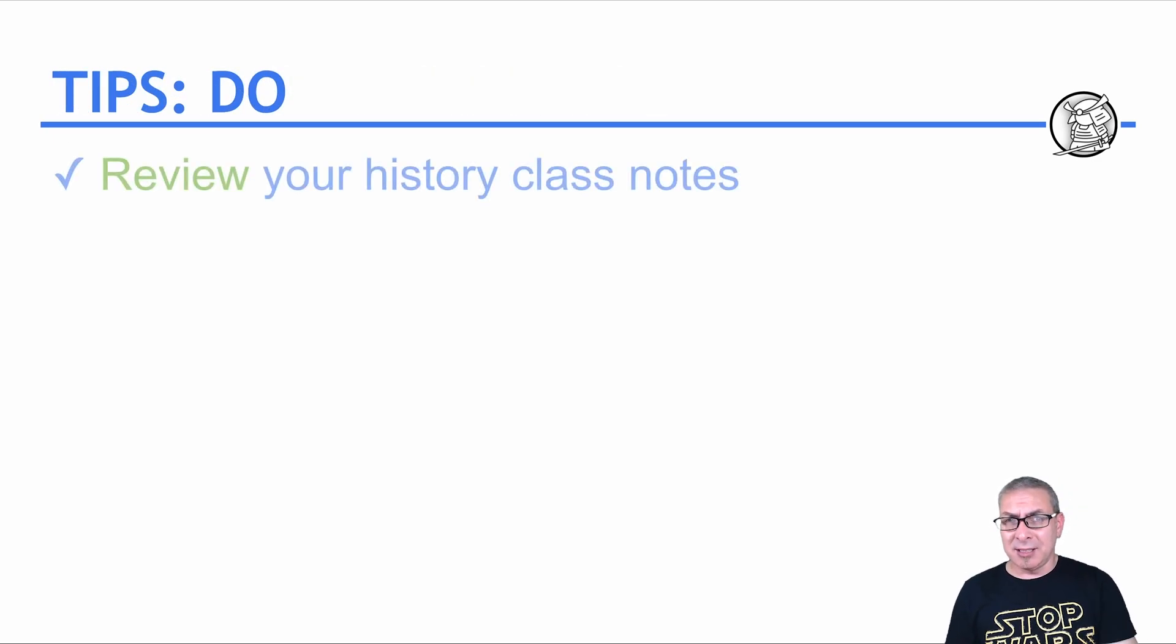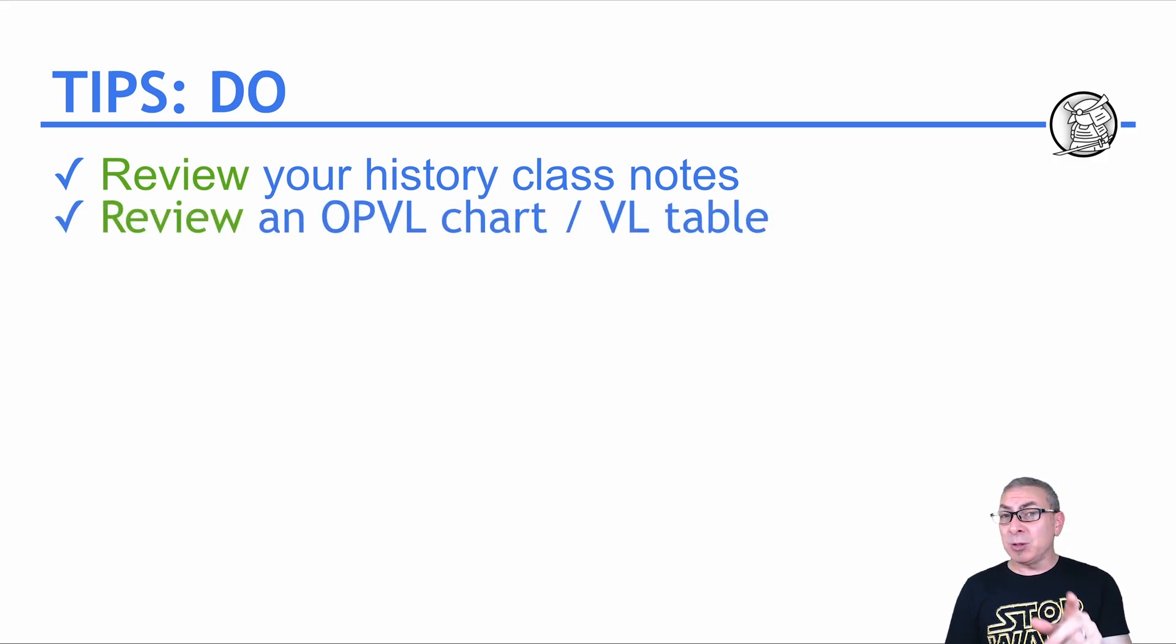So tips include, as always, review your history notes, review an origin, purpose, values, and limitations chart, or a values and limitations table, or both. I will put those in the description so you can see them in a Google Doc.